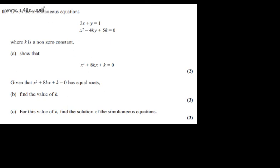This is question 10. It says given the simultaneous equations 2x plus y equals 1 and x squared minus 4ky plus 5k equals 0, where k is a non-zero constant, in part a show that x squared plus 8kx plus k equals 0.